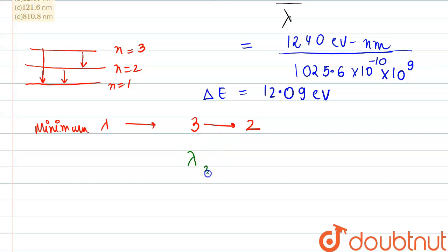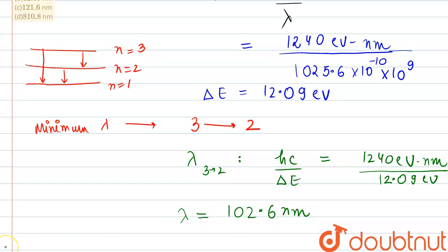Wavelength for third to second transition we would be having over here, that will be equal to hc upon delta E. hc again we will put the value 1240 electron volt nanometers, and delta E we just calculated is 12.09 electron volt. From here wavelength comes out to be 102.6 nanometers.